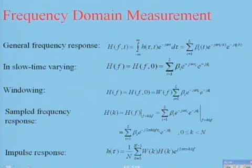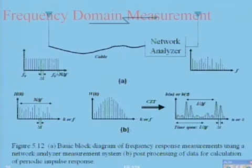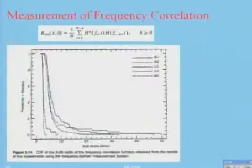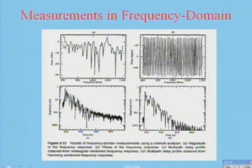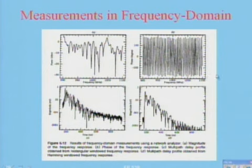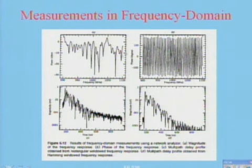One typical picture of what I'm measuring: this is the frequency response coming from 900 to 1100 megahertz, and this is the phase of the frequency response. Each point has a magnitude and a phase, and as I change the frequency, that phase and magnitude are changing. If I take the inverse Fourier transform of this, that's the channel impulse response.